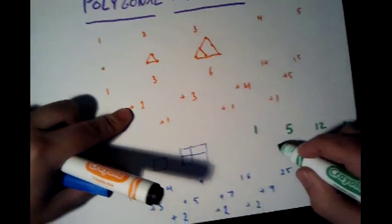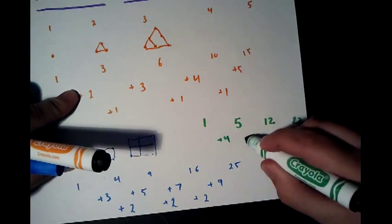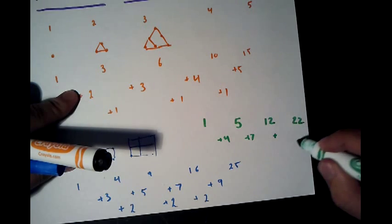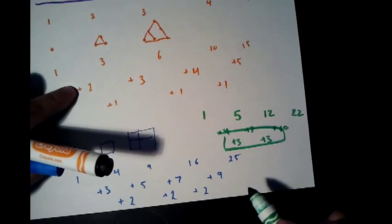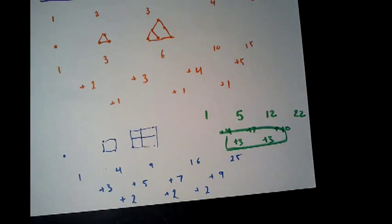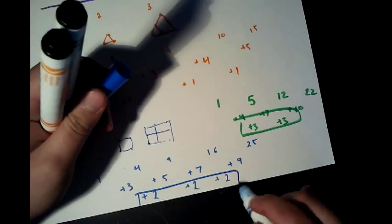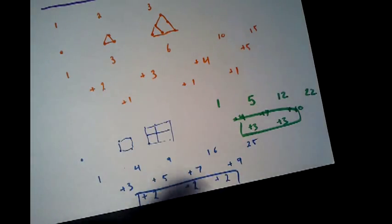And the difference between this one and this one is plus four, plus seven, plus ten. And the difference here is three. So the difference where the things start equaling is three here. For square numbers, it's two. And for triangular numbers, it's one.